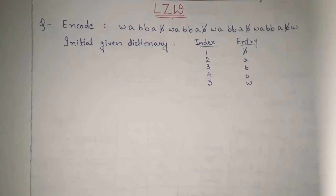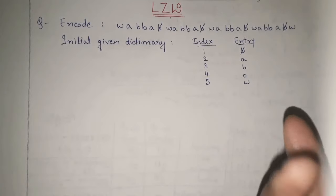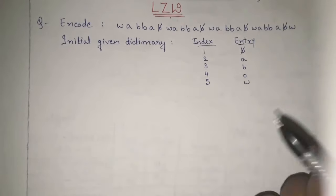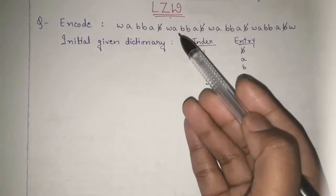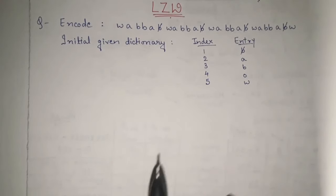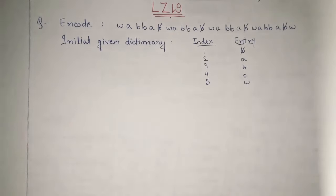In today's video, we are going to learn about LZW. In our previous series of data compression videos, we have already seen LZ77 and LZ78. After LZ77 and LZ78, we have this third type of method, that is LZW. We will learn about LZW encoding as well as LZW decoding. In this particular video, we are going to learn how to encode any given sequence with the help of the LZW method.